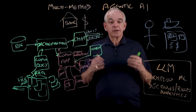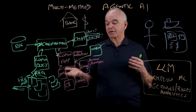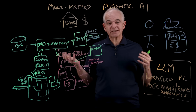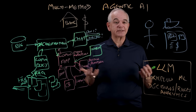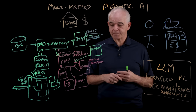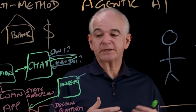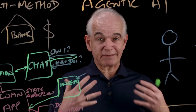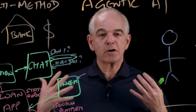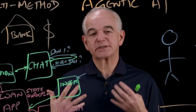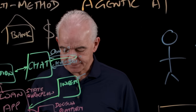Now we have the credit bureau data from the credit bureau, bank data from the customer, and the brochure data about the asset. We can go ahead and make a decision. So we're using large language models to find out what you want and to get data in very quickly, but relying on workflow, decision agents, and data agents to do the heavy lifting of the decision in the background.